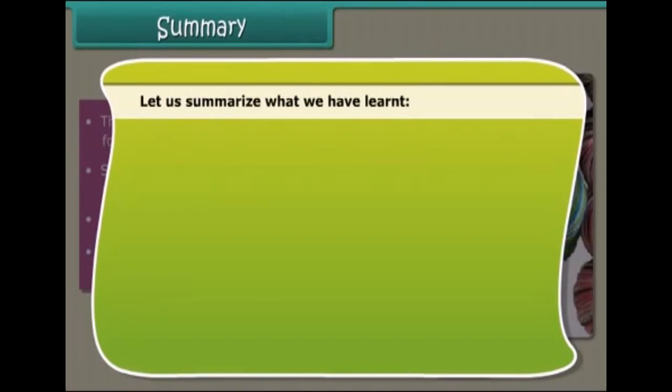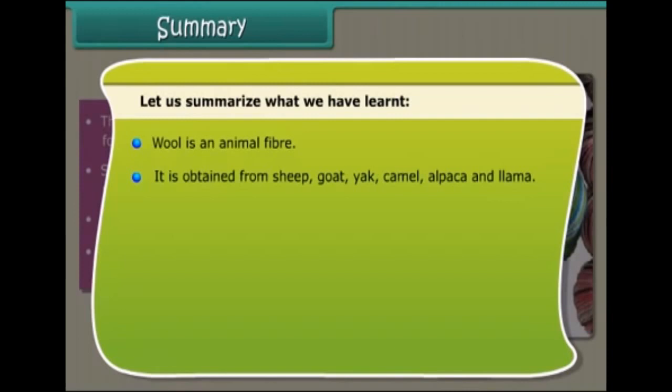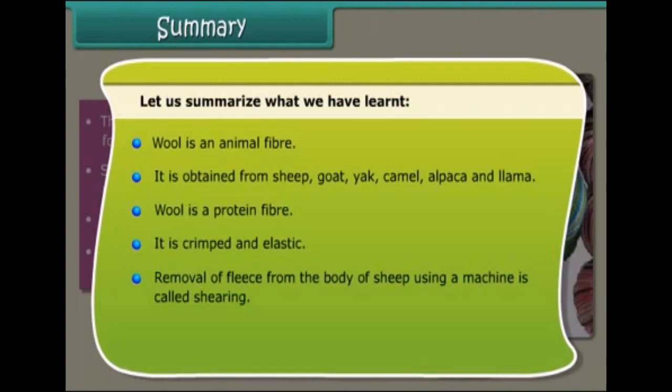To summarize: Wool is an animal fiber obtained from sheep, goat, yak, camel, alpaca, and llama. Wool is a protein fiber — it is crimped and elastic. Removal of fleece from the body of sheep using a machine is called shearing. Washing the fleece to remove grease, dirt, and dust is called scouring.